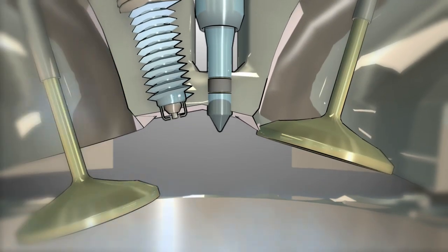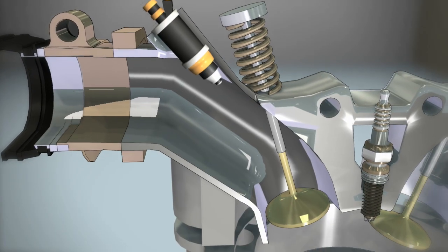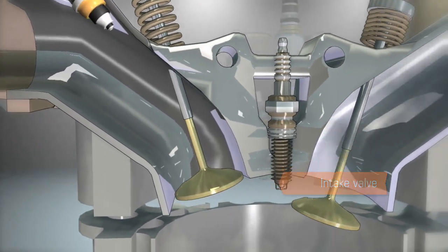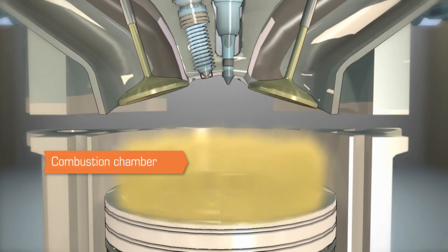A direct injection engine uses a different approach to deliver fuel to the cylinder. As an alternative to the port fuel injector, which delivers fuel past the cylinder's intake valve, the direct injection engine has fuel injectors that spray fuel directly into the combustion chamber.